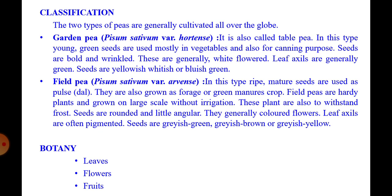Classification: two types of peas are generally cultivated all over the globe. First, garden pea — that is Pisum sativum variety hortense — and field pea — that is Pisum sativum variety arvense. In garden pea, also called table pea, young green seeds are used mostly as vegetables and also for canning purposes. Seeds are bold and wrinkled, generally white flowered; leaf axils are generally green; seeds are yellowish, whitish, or bluish green.